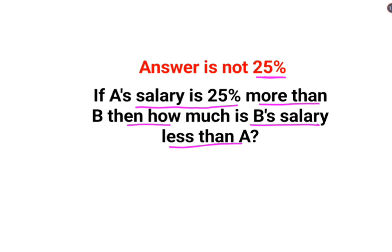Let me quickly explain why. When you have something like this, I tell my students that you assume one of the salaries to be 100. So let's take B's salary to be 100 because that becomes easier for us. So what is A's salary? That is 100, that is B's salary, plus 25% of B's salary, right?